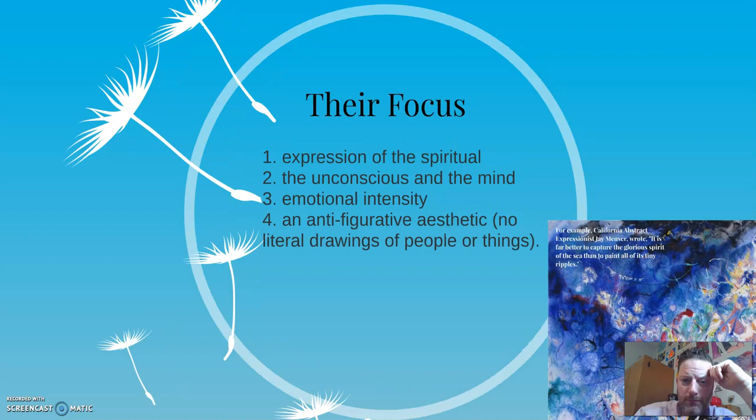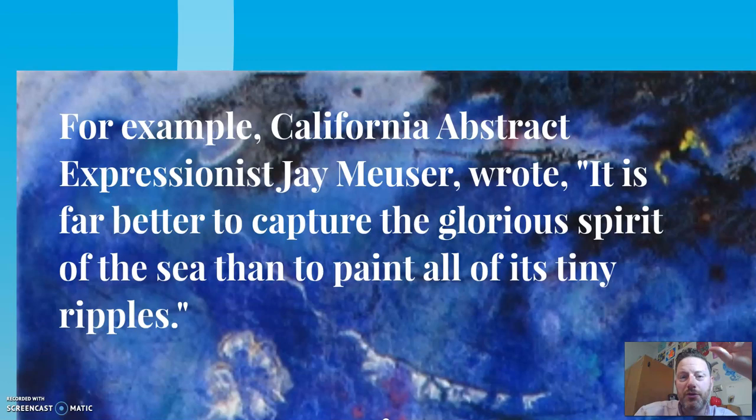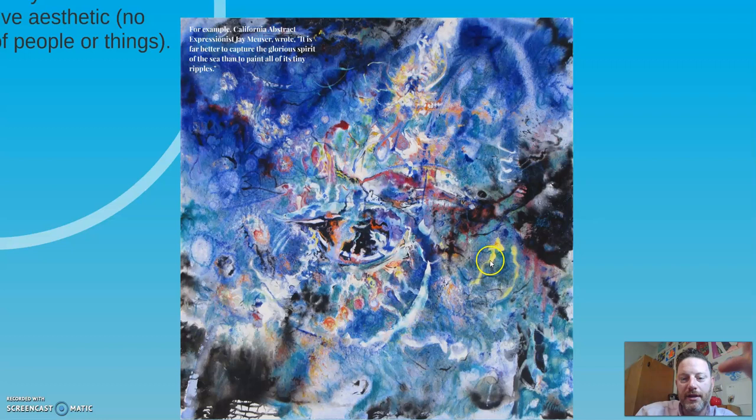They're looking at the spiritual, the unconscious mind — trying to be emotional. They're not going to draw something specific. If I want to do dog, I don't draw a dog — I draw the feeling of dog. Here's an example: do you want to draw every little ripple in the ocean, or do you want to get the feeling of the ocean? So this is the feeling of the ocean. Frankly, I think that's really good. I like that one.